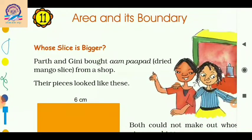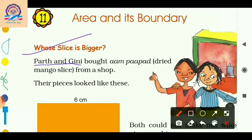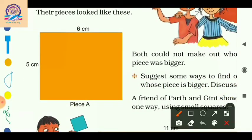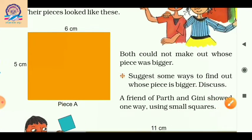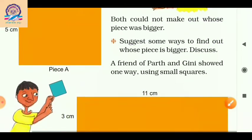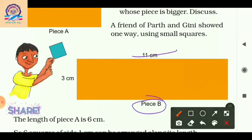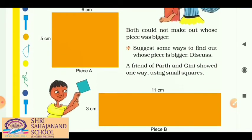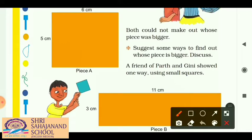Now let's come to the topic 'Whose Slice is Bigger.' Parth and Guinea bought aam papad — dried mango slices — from a shop. Their pieces looked like this: Piece A has dimensions 6 centimeter and 5 centimeter. Both could not make out whose piece was bigger, so the question is to suggest some ways to find out. Piece B has dimensions 11 centimeter and 3 centimeter. We will find their areas since both are rectangles.